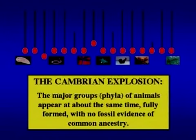What do we find? Something strikingly different. Virtually all the major groups of animals appear fully recognizable and fully formed at about the same time — dated right now at about 540 million years ago — in something called the Cambrian explosion.